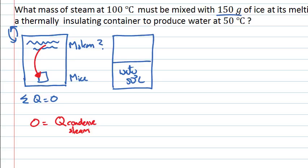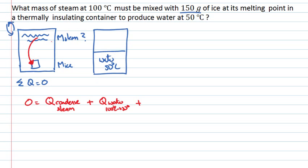That leaves us with hot water at 100 degrees Celsius. That hot water also gives up heat, associated with cooling from 100 degrees Celsius down to 50 degrees Celsius. That heat can't go into the environment, so it all goes into the ice — some to melt the ice, and some to raise the resulting water from 0 degrees Celsius up to 50 degrees Celsius.